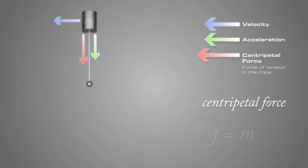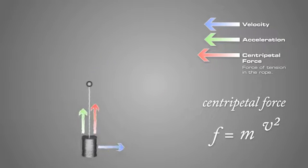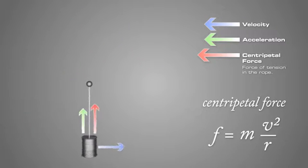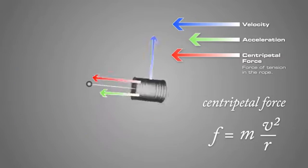The centripetal force is equal to mass times velocity squared divided by the radius. As these variables change, so will the centripetal force.